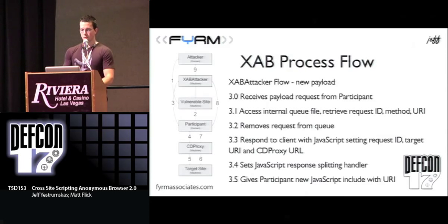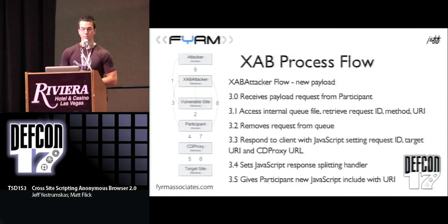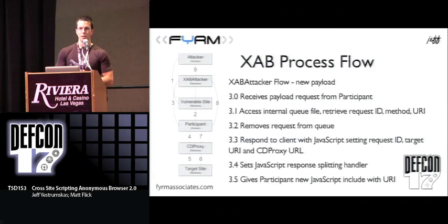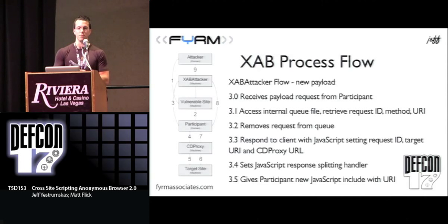The XAB Attacker — this is that core piece. It receives the payload request from the participant. It's simply a JavaScript source equals and then the location of the XAB Attacker script. What's going to happen is it's going to look at its internal queue file that HTTP Proxy B has updated, look to see what needs to be executed, remove that request from the queue, and then respond to the client — the victim or participant — with some JavaScript that makes the actual request to the cross-domain proxy. It's also going to set some JavaScript functions to handle the data coming in. You can look at the code if you want to know more.